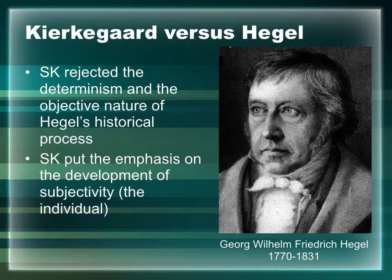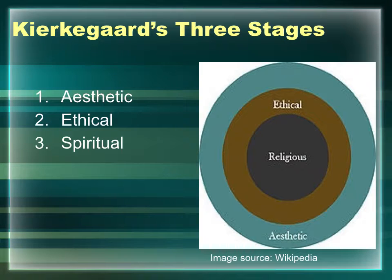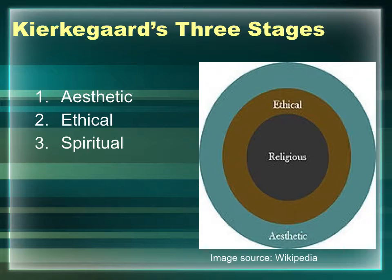What we'll look at are the three stages of subject formation according to Kierkegaard: the aesthetic, the ethical, and the spiritual. While Kierkegaard rejected elements of Hegel's philosophy, he did keep the dialectic — but he relocated it from the level of history, which we can't change, to the level of the individual self. There is a dialectic in at least the first two stages — the aesthetic and the ethical — though the spiritual stage is a very different matter.